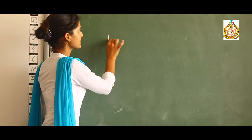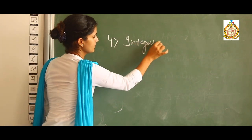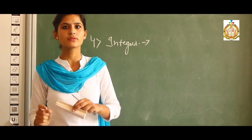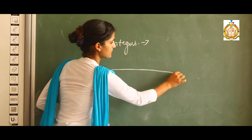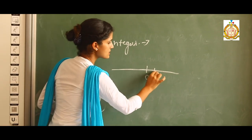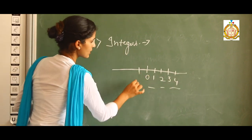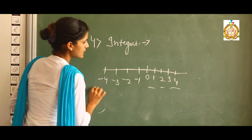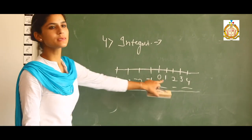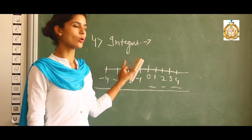Our fourth topic is integers. Those numbers which include both negative terms and positive terms together are integers. We show integers on a number line: starting from 0, then 1, 2, 3, 4 and so on in the positive direction, and negative terms in the other direction. Integers contain both negative numbers and positive numbers.